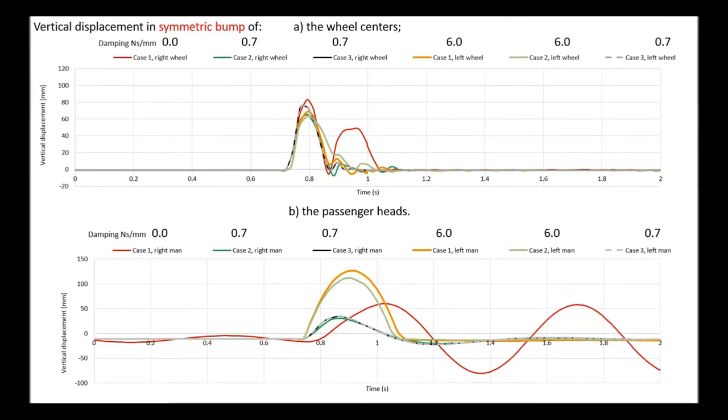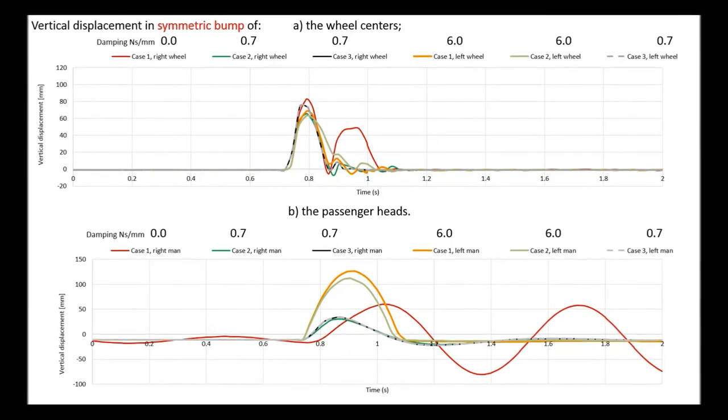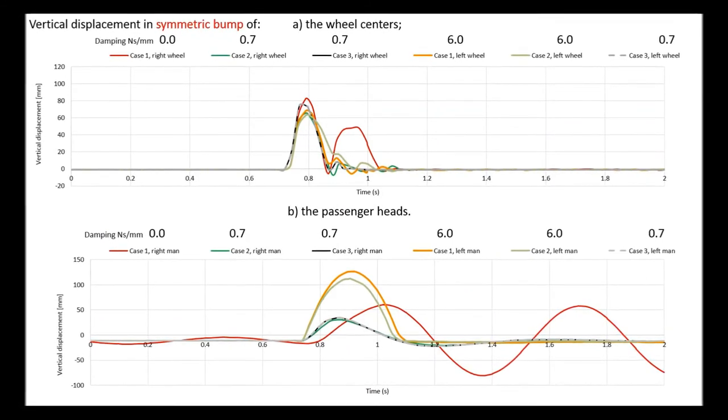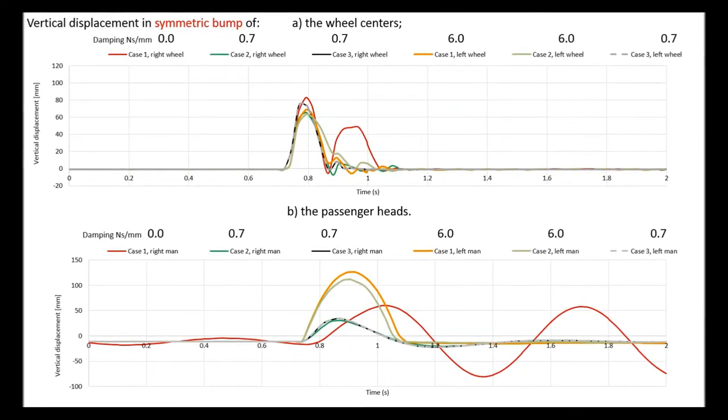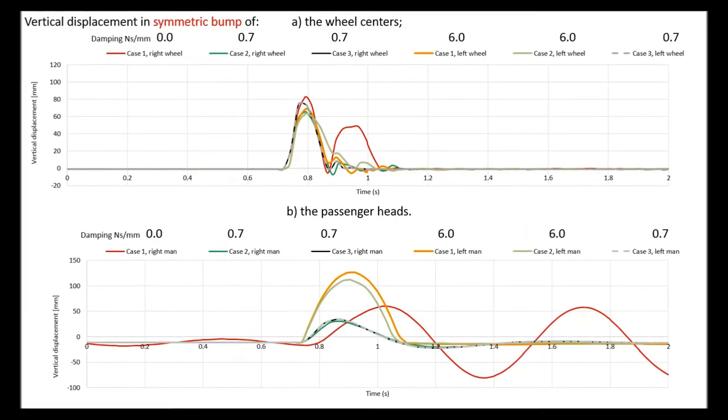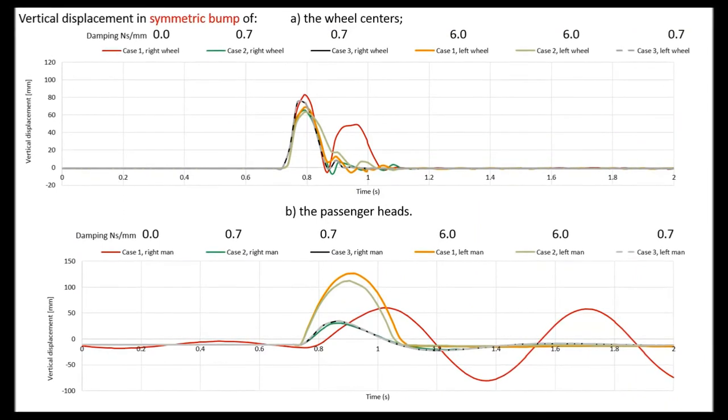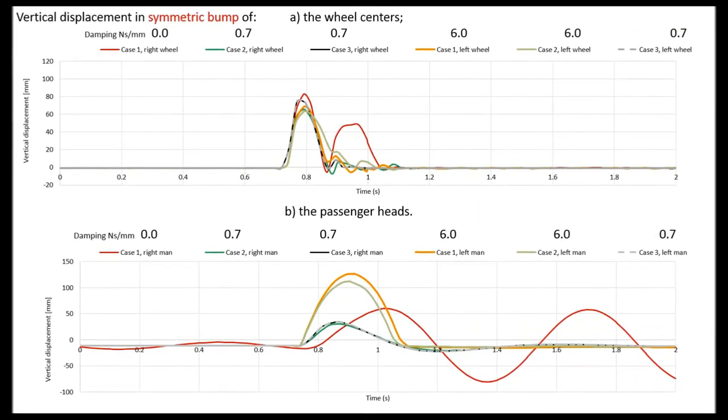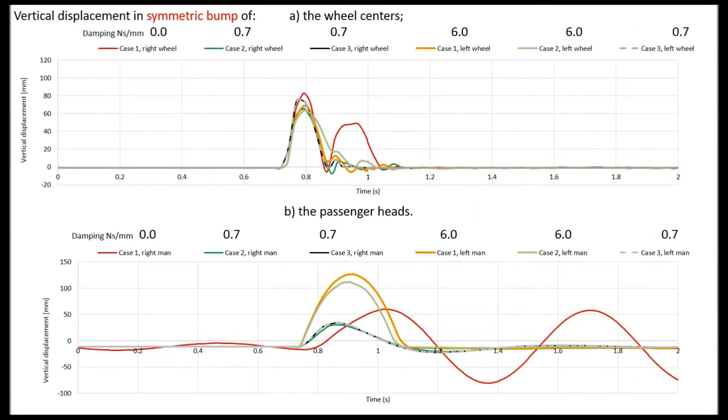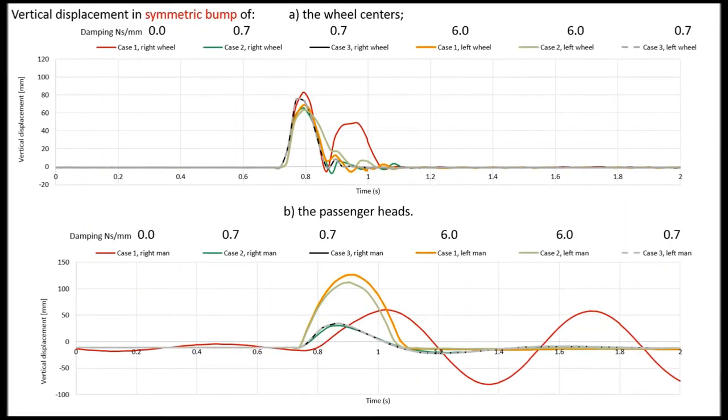In case one, red and orange lines, the right passenger, who has no damping under his feet, begins to oscillate with an amplitude of about 60 mm. The left passenger, on the contrary, does not oscillate, but performs a single jump of approximately the same amplitude. This is because the very high damping coefficients make the damper almost rigid.